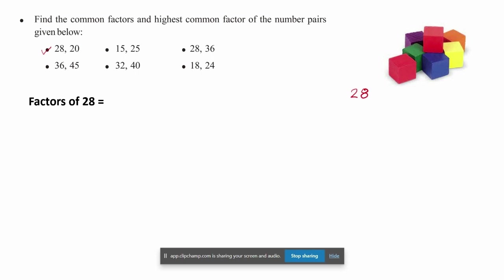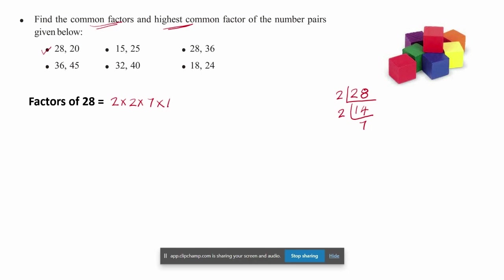If we want to find the factors for 28, we will find the common factor and the highest common factor. We start with 2, 2, 1, and 2 — then 8, 4. We show 2 times 14, and 2 times 7 is 14. So 7 equals 7, meaning 28 equals 2 into 2 into 7 into 1. So this is a common factor, and 28 equals 28.